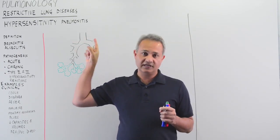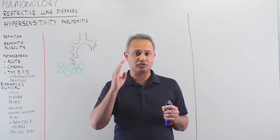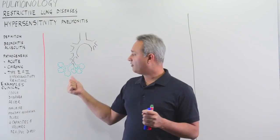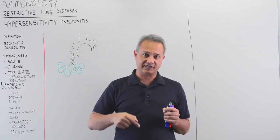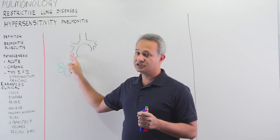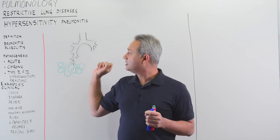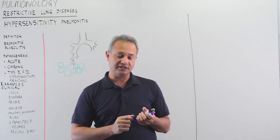Alveolitis, hypersensitivity alveolitis, a mixture of type 3 and 4 allergies of the respiratory zone and restrictive disease because of the fibrosis in the respiratory areas. So with that, let's start pathogenesis.